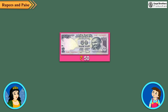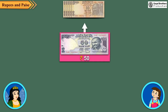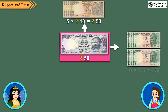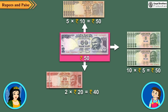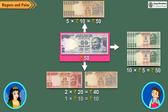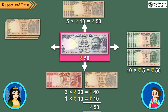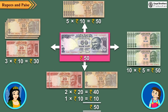And if you want to pay 50 rupees to someone, you can do it in a number of ways. Some of these are 5 notes of Rs.10, 10 notes of Rs.5, 2 notes of Rs.20 and 1 note of Rs.10, or 3 notes of Rs.10 and 1 note of Rs.20.